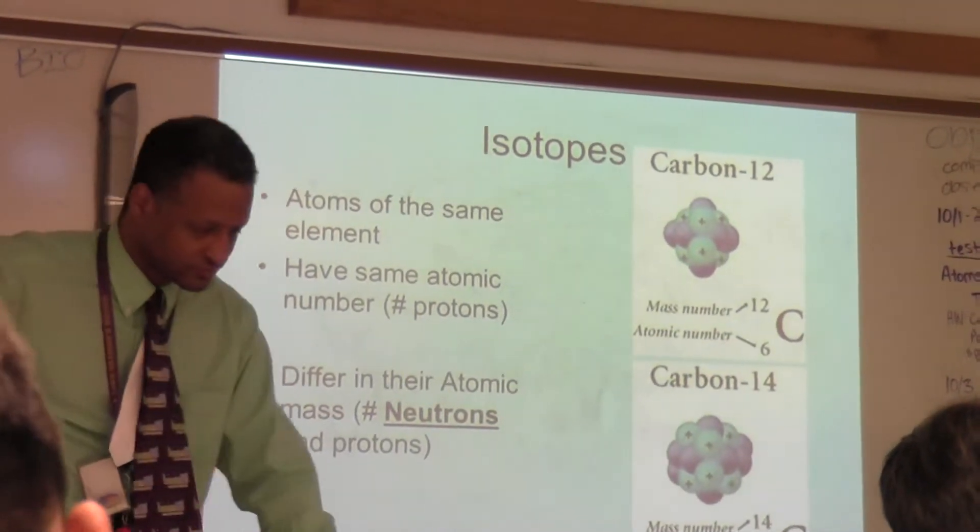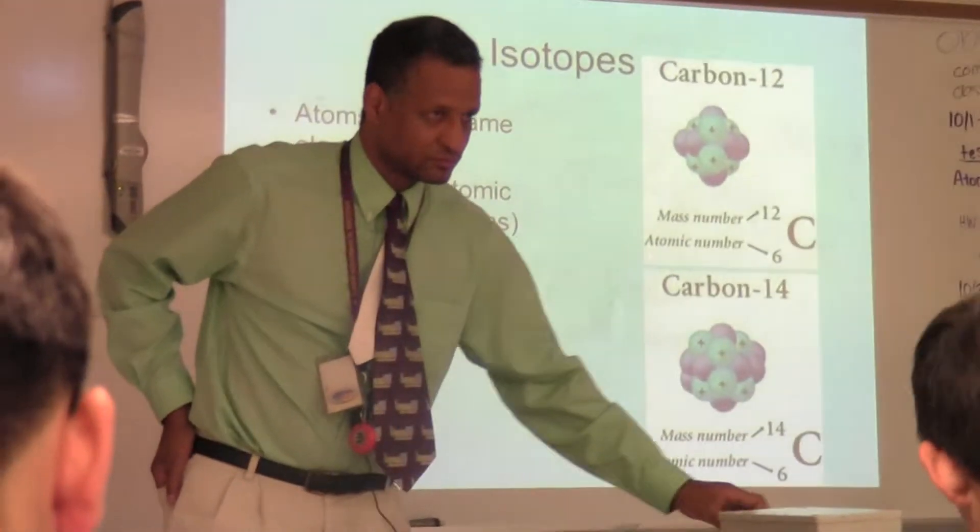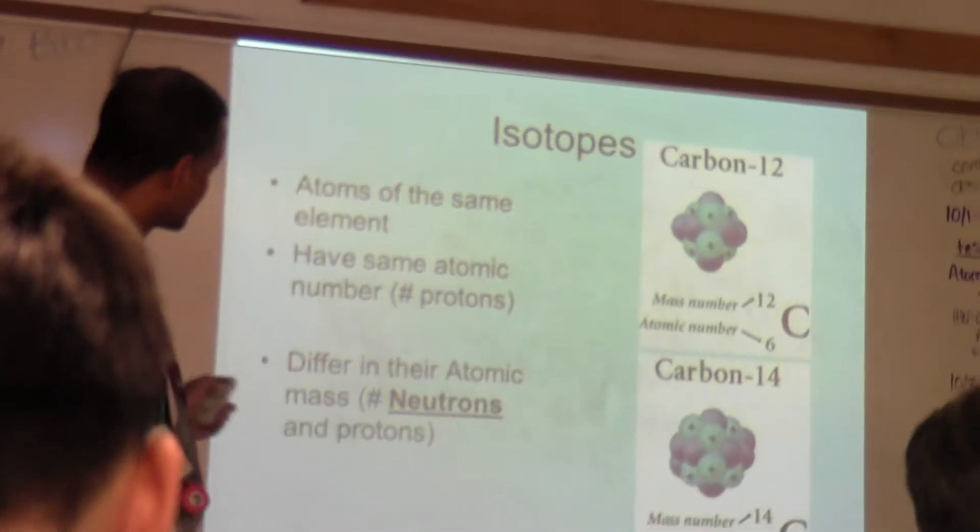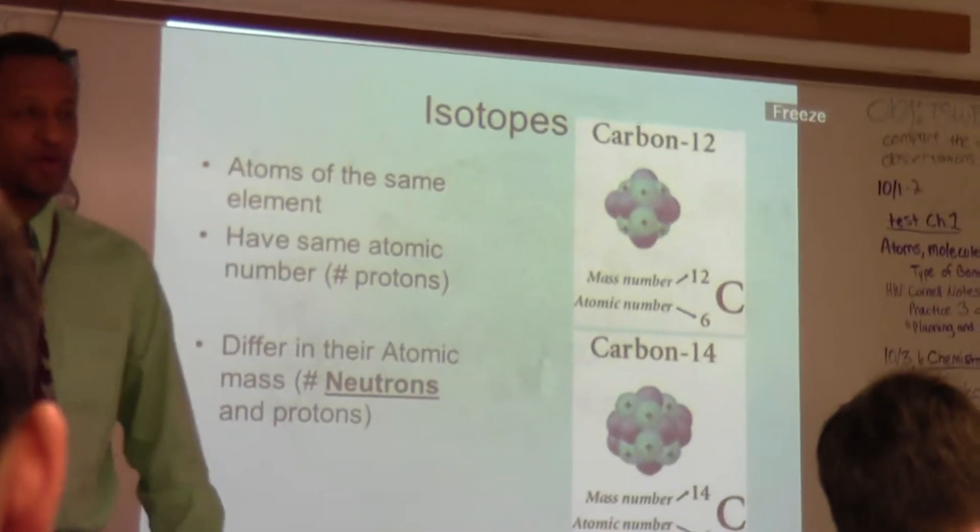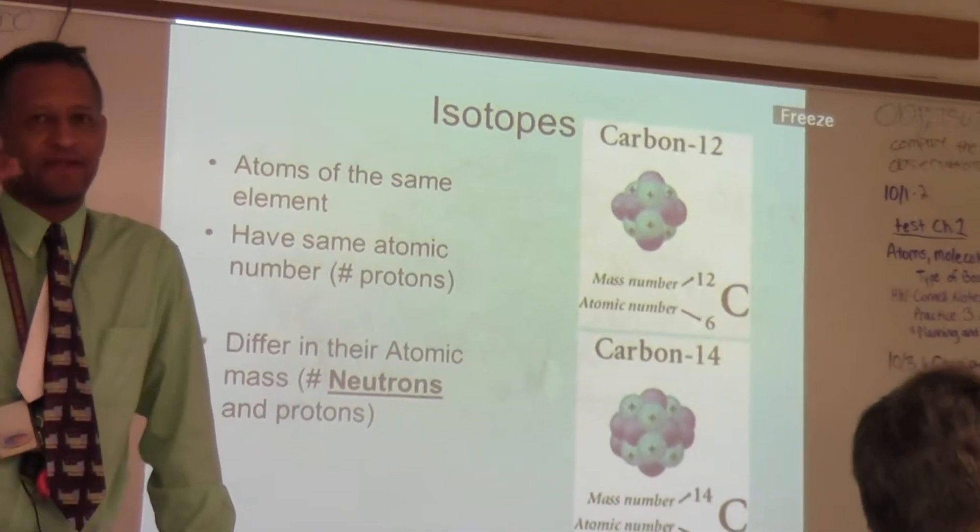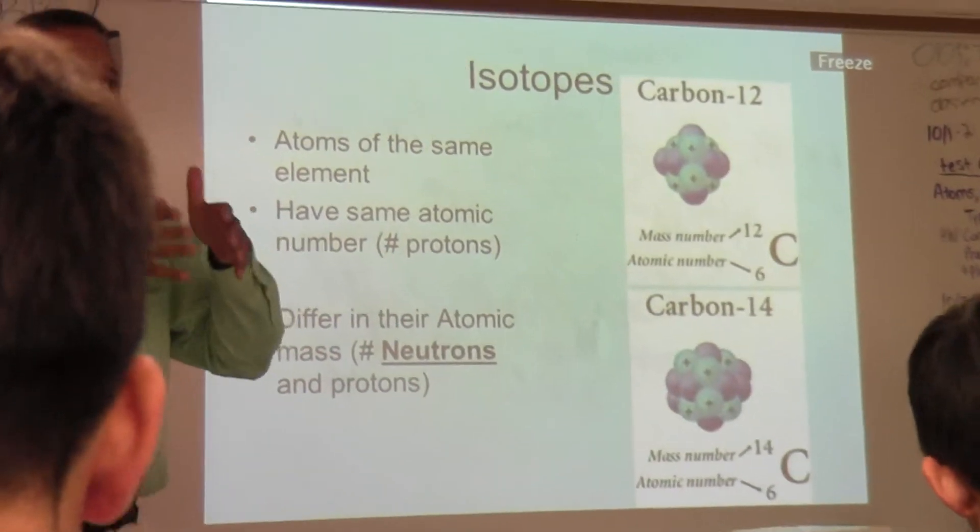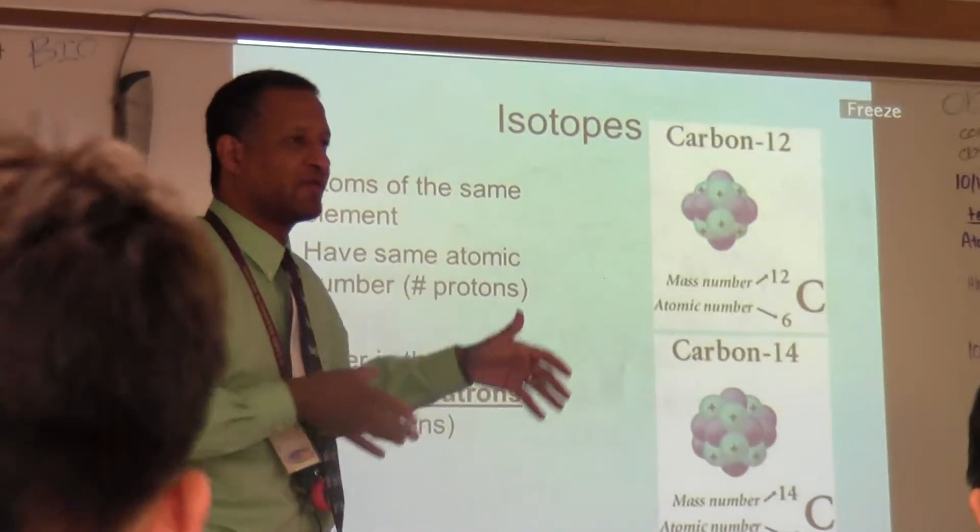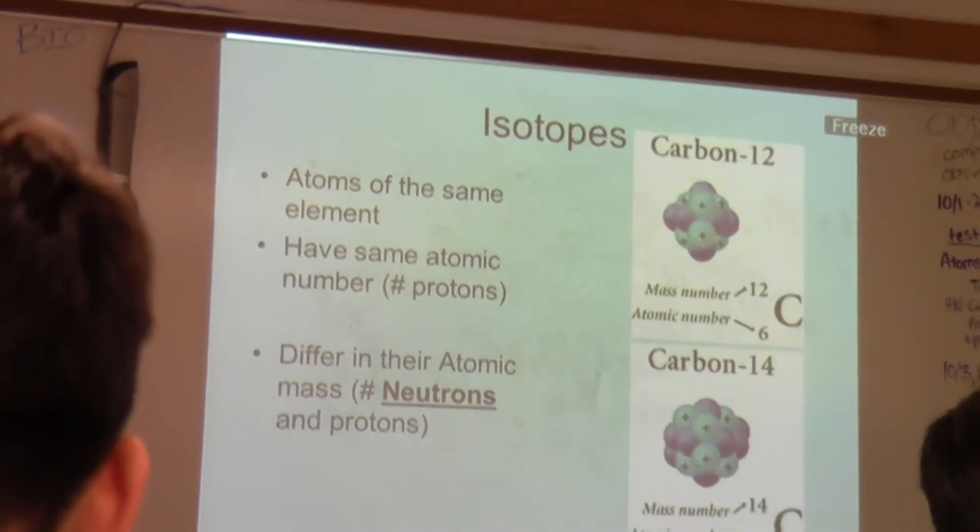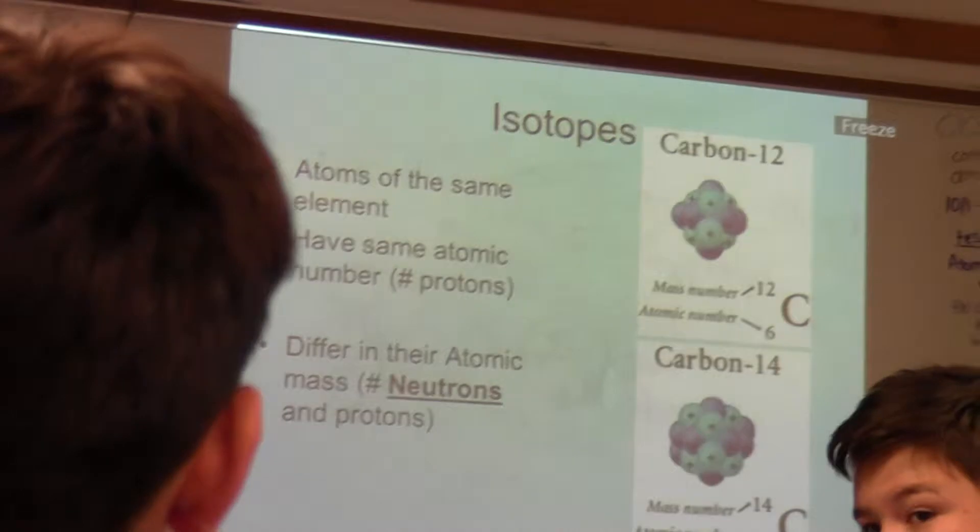So, what we're going to do now is we're going to go over how to fill out the little dots. Because the whole idea is starting to get to predict behavior. Proton numbers don't change. Can an electron number change? When it's interacting.